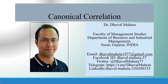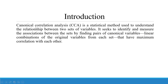Hello to all my viewers, this is Dr. Dhaval Mehta and today we are going to discuss how to run canonical correlation in SPSS. Canonical correlation analysis is a statistical method used to understand the relationship between two sets of variables. It seeks to identify and measure the associations between the sets by finding the pairs of canonical variables — the linear combination of the original variables from each set that have a maximum correlation with each other.